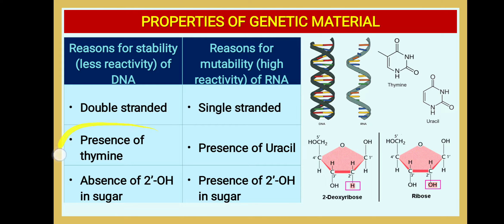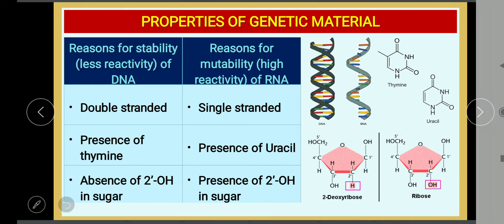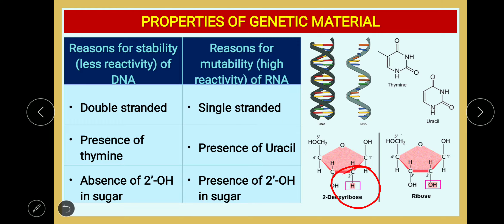The presence of thymine instead of uracil makes DNA chemically non-reactive. Most importantly, DNA has only hydrogen at the 2' position instead of hydroxyl. This makes DNA less reactive chemically compared to RNA. These are the properties that explain why DNA has been selected as a better genetic material than RNA.